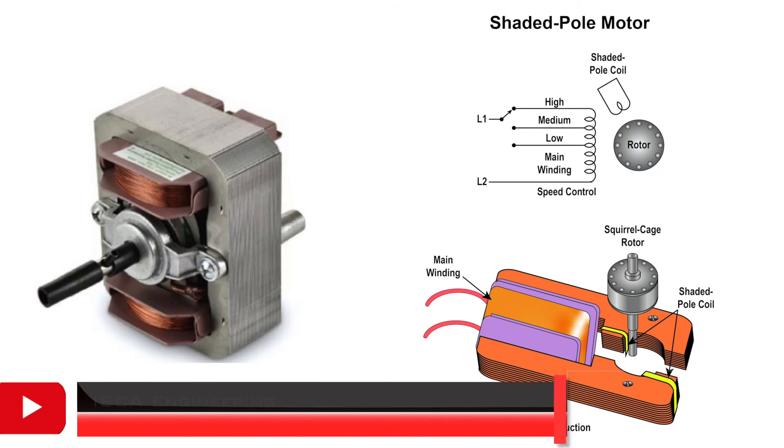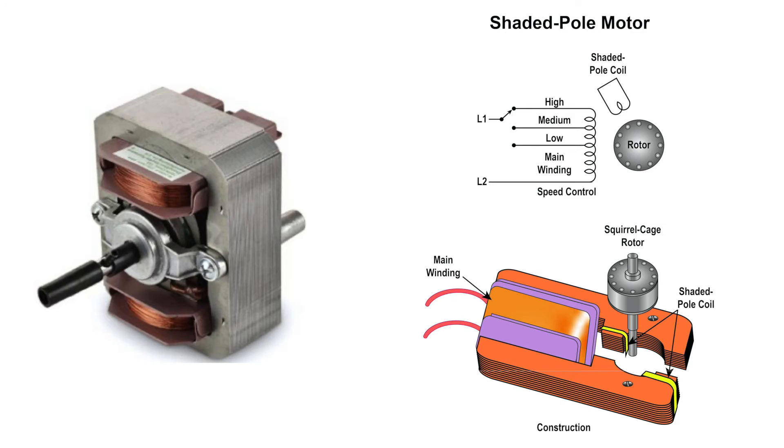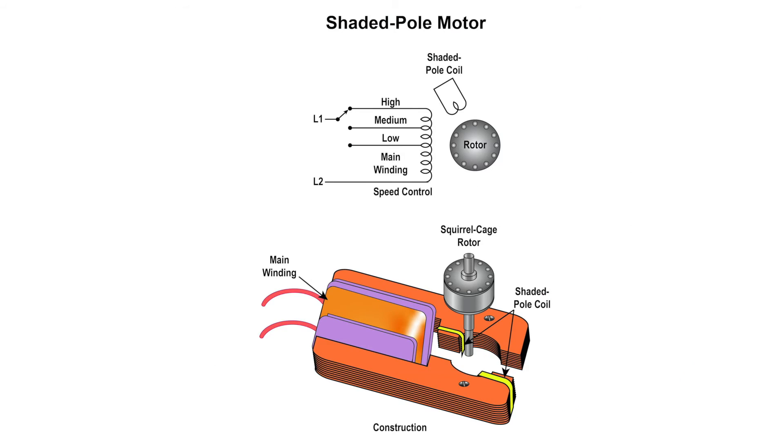The shaded pole motor has only one main winding and no start winding or switch. When a single phase AC is supplied to the stator windings, due to the shading provided to the poles, a rotating magnetic field is produced.